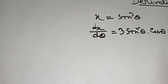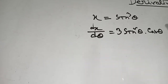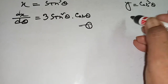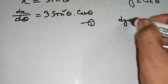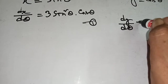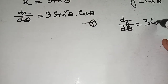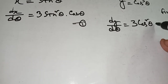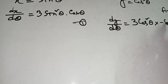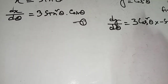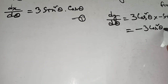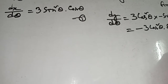So dx/dθ = 3 sin²θ · cosθ. This is equation one. Next, y equal to cos cube theta — same method: differentiate both sides with respect to theta. dy/dθ = 3 cos square theta, power comes first, power decreases by 1, into d/dx of cos theta, that means minus sin theta, into d/dθ of theta, that means 1.